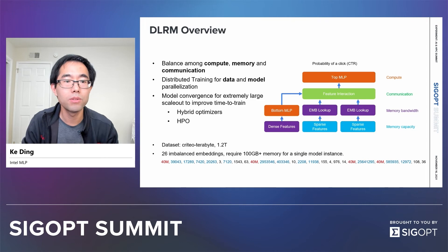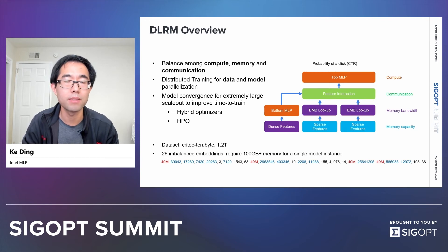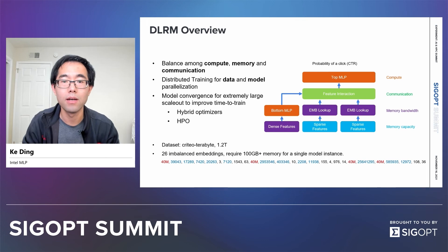However, when we do so, it means that we are increasing the global batch size and reducing the number of weight updates per epoch. This then introduces another challenge on model convergence.